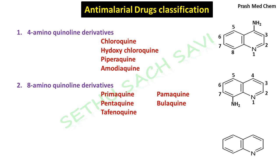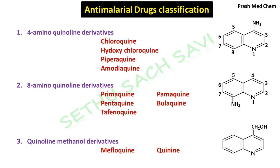Now, again quinoline. This time, if you attach a CH₂OH group at the fourth position of quinoline, it is called quinoline-methanol. Quinoline-methanol derivatives were found to have anti-malarial properties. The drugs belonging to this category are mefloquine and the natural compound quinine, isolated from the cinchona bark way back in the 18th century.